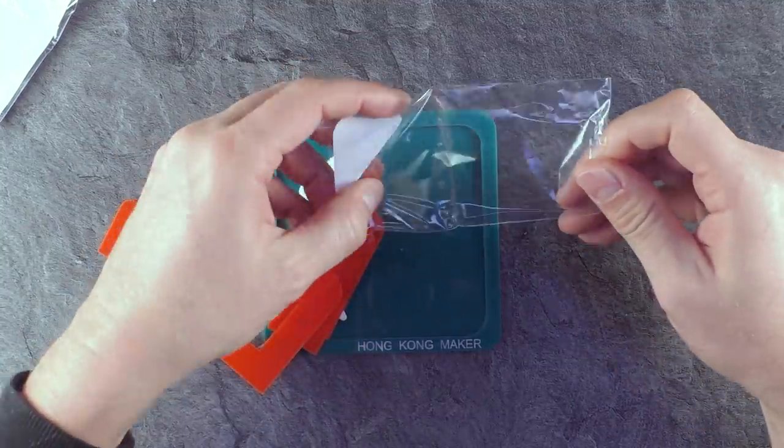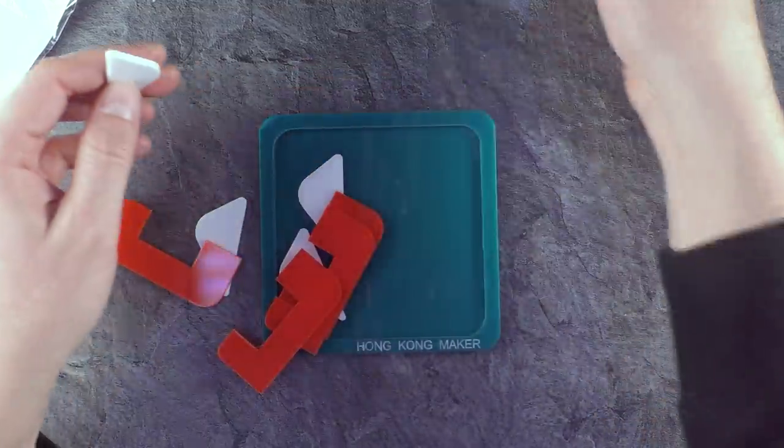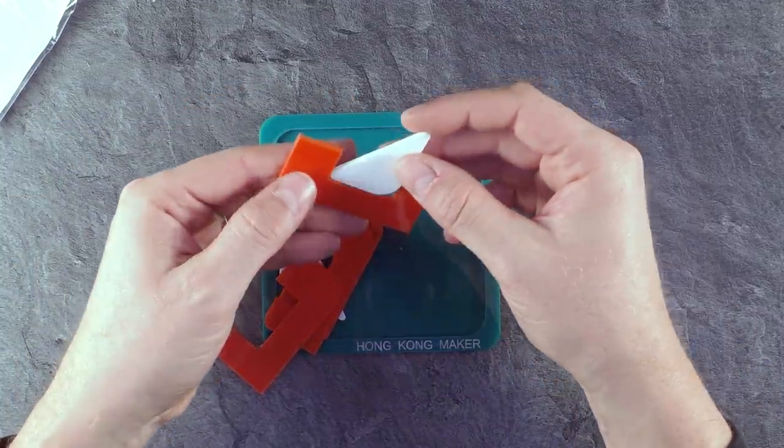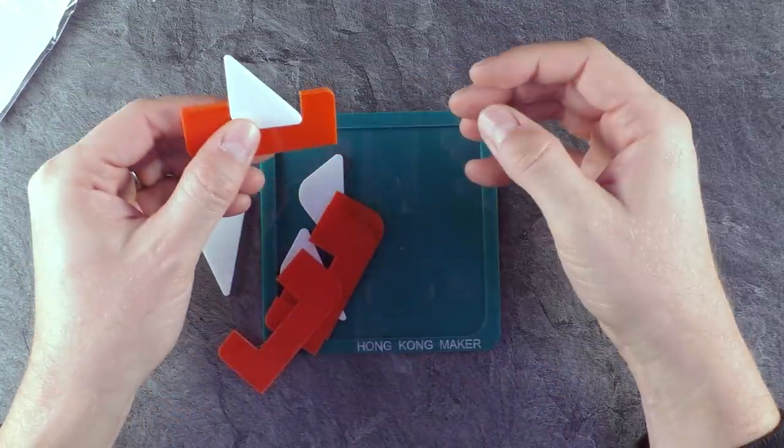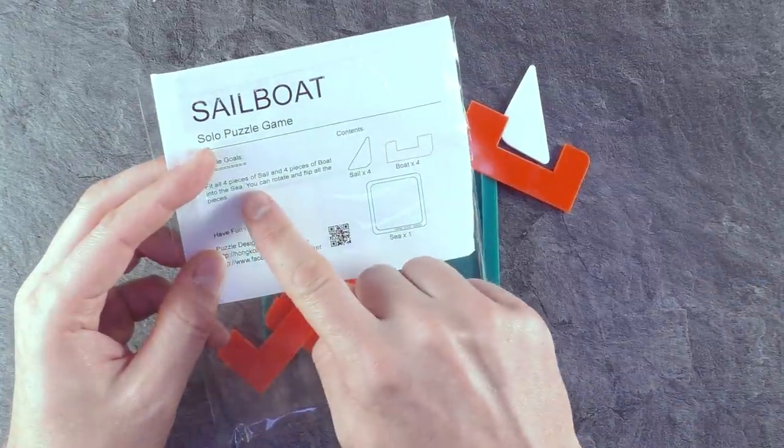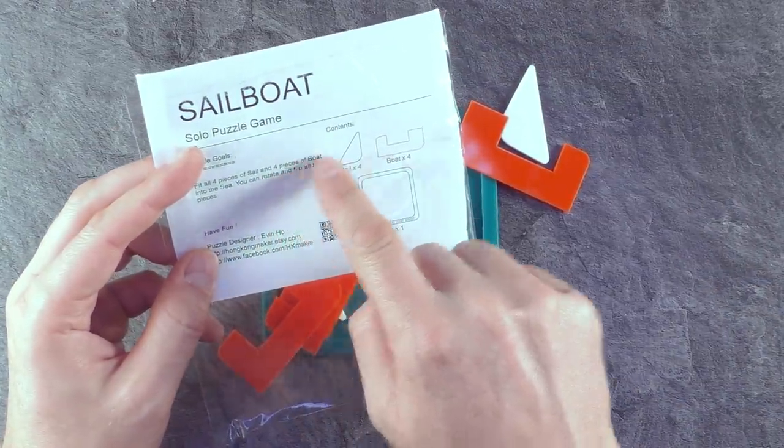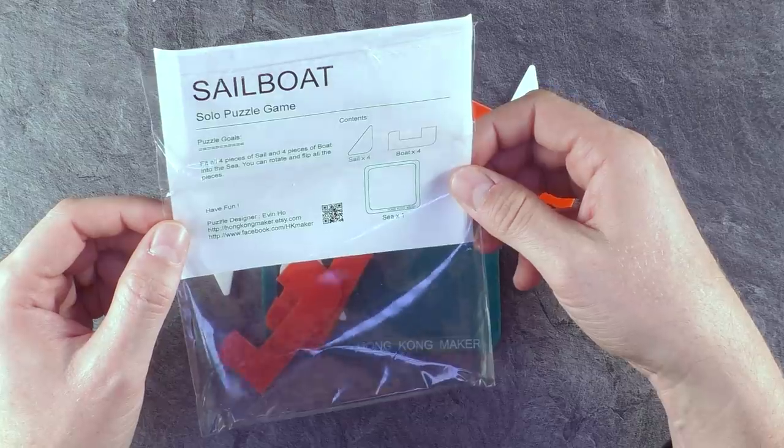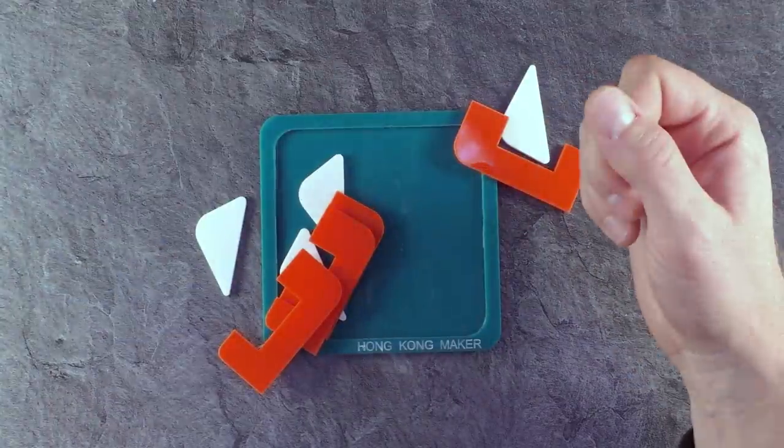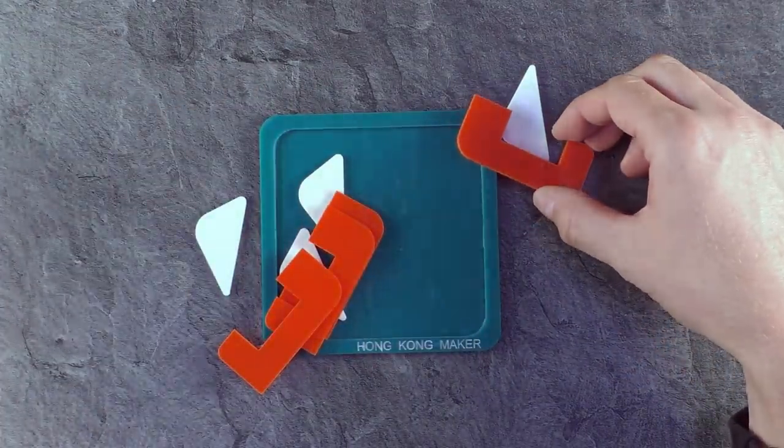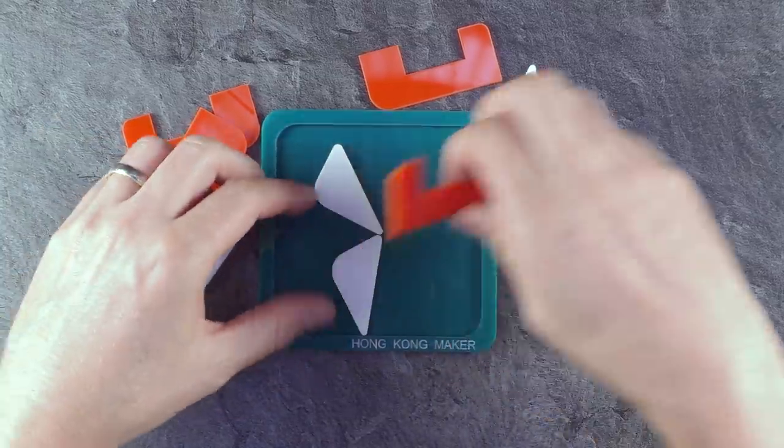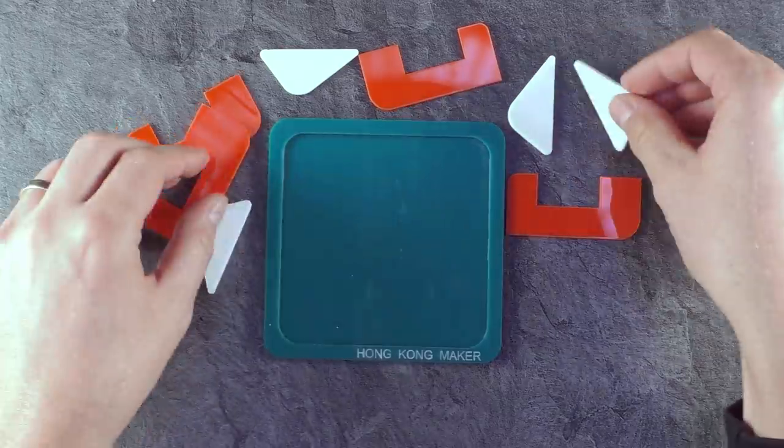These are here the pieces that need to be fit into this frame. Here we go, overall eight pieces. And together, this is why the name, or where the name is coming from, they're forming a sailboat. Task of this puzzle is to fit all four pieces of sail and four pieces of boat into the sea. You can rotate and flip all the pieces. That's the task, pretty simple. It's not mentioned if there are some gaps that can remain after all pieces fit in. We're gonna find out, I hope so at least.